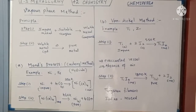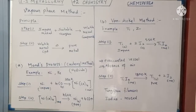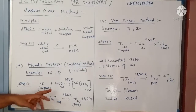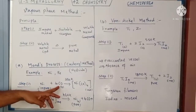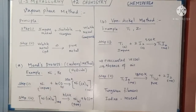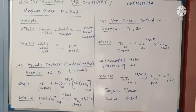The second vapor phase method is the Van Arkel method, which is almost similar to the Mond process. The only difference is that in the Mond process the impure metal is heated with carbon monoxide, whereas in the Van Arkel method the impure metal is heated with iodine. Metals such as titanium and zirconium are generally refined by the Van Arkel method.